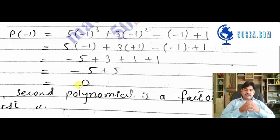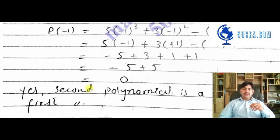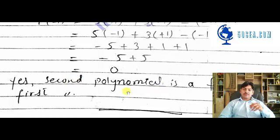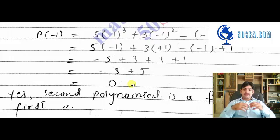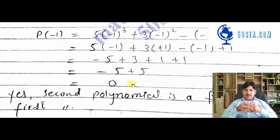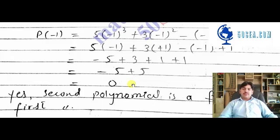So because the answer is zero, this is why we say yes, the second polynomial is a factor of the first polynomial. Thank you for watching.